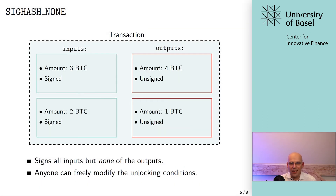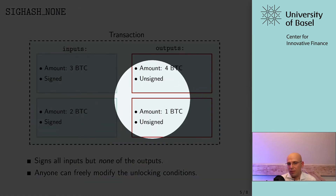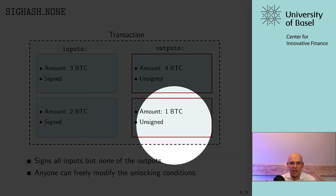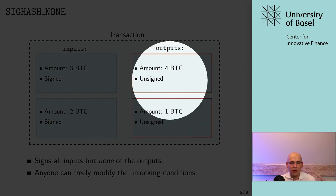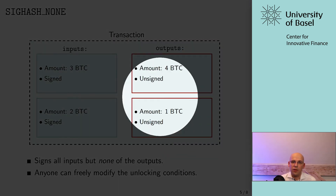With SIG hash NONE, it's even more strange — essentially what you're saying is you're just going to sign the inputs, but you absolutely do not care about the outputs, and anyone can freely change them. You're just going to put some inputs in there, and as long as these inputs are part of the transaction, you're fine. You can add any outputs. So this could be changed by anyone who receives this transaction — they could put new outputs in there. Somebody confirming the transaction, like miners, could freely change the outputs.